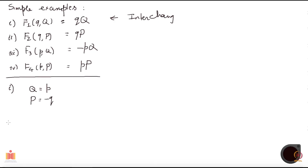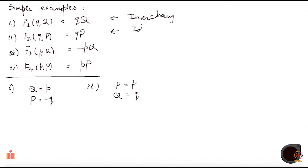If you look at the second one, you will find that the new momentum is the same as the old momentum and the new coordinate is the same as the old coordinate, which means this is an identity transformation — it is not changing anything.